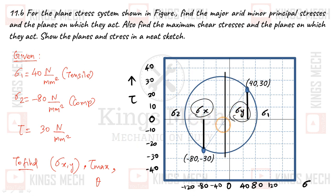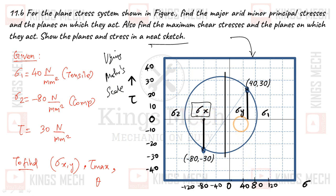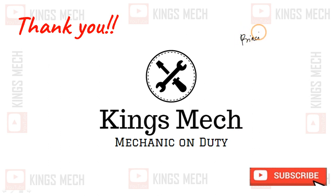We mark sigma 1 and sigma 2 on the diagram. This is the problem completed. We draw the circle and mark the outer points. This is the neat sketch. Using Mohr's circle at exact scale, you get the exact values of the principal stresses and maximum shear stress. This is the type of principal stress problem.